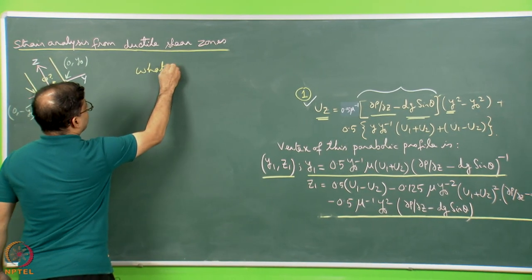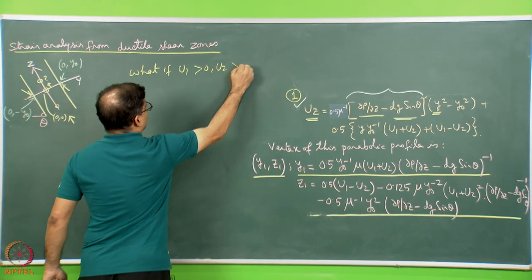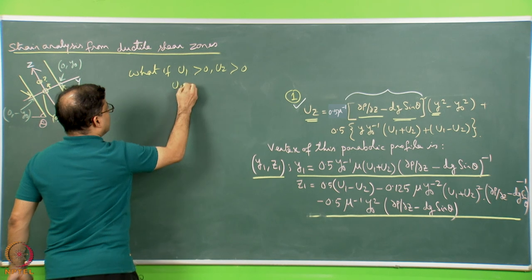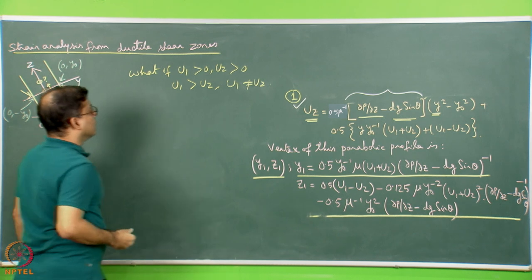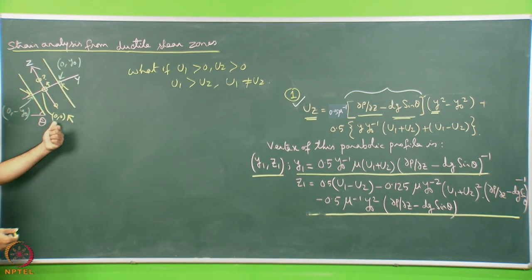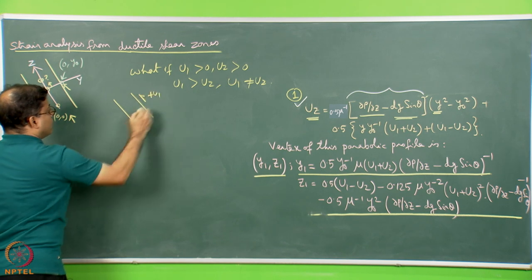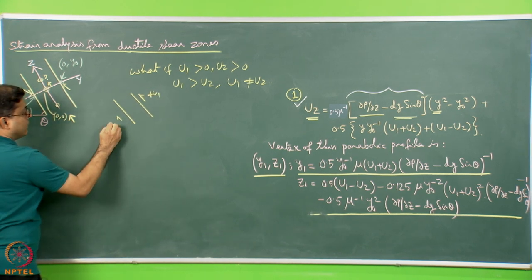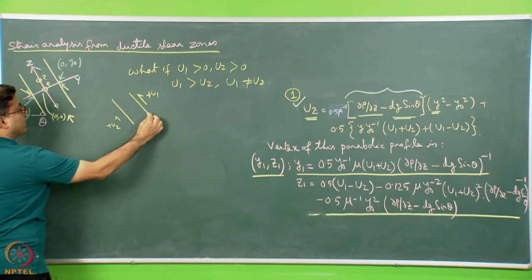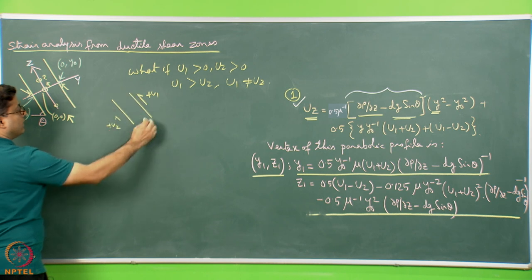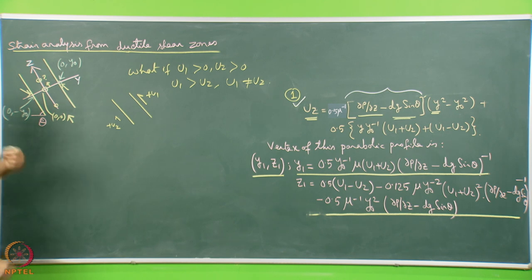Now what if u1 is greater than 0 and u2 is also greater than 0, with u1 greater than u2, meaning u1 is not equal to u2? Comparing to the diagram, say this is plus u1 and this is plus u2. The half arrow for u1 is bigger, indicating a higher slip velocity at that boundary, while u2 is lower — but both are in the same direction.